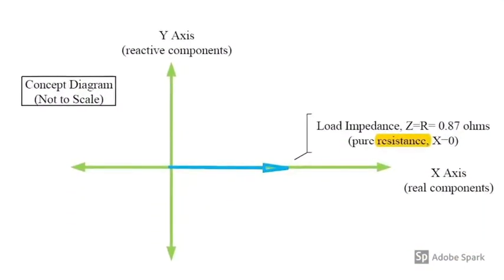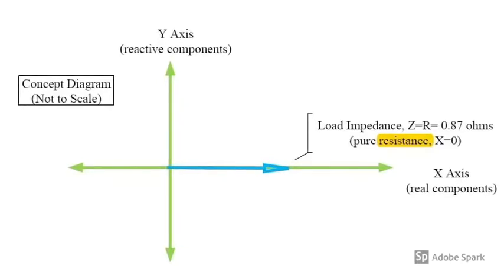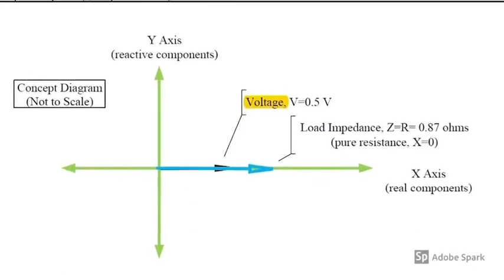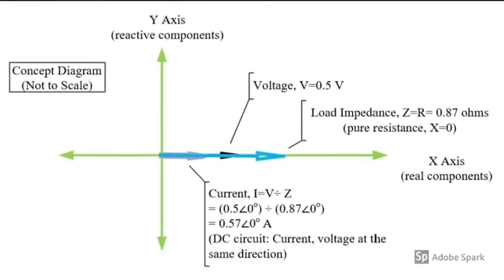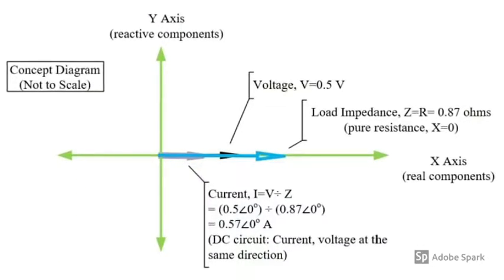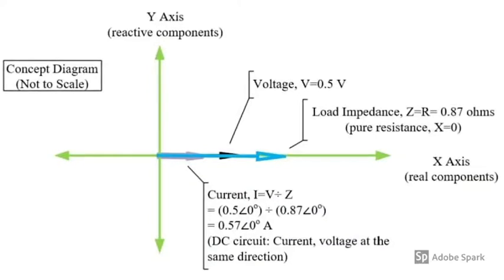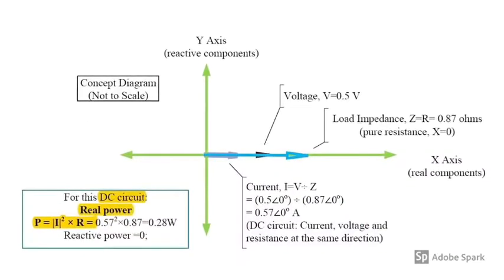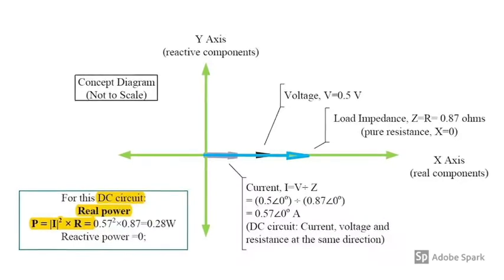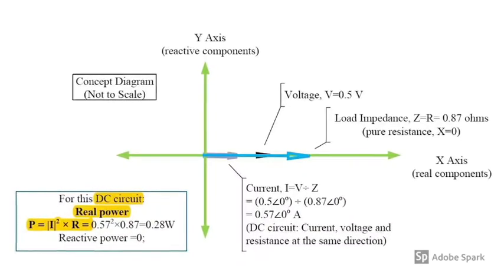When we have pure resistance load at 0.87 ohms, source voltage is 0.5 volt DC. The current is voltage divided by impedance. In DC circuits, current and voltage are at the same direction. The real power P is current magnitude squared times resistance.